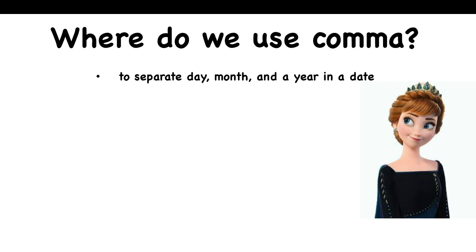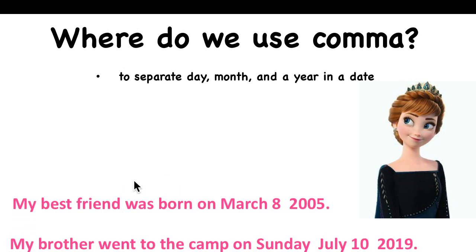And the last one: day, month, and year. 'My best friend was born on March 8, 2005.' This is the date — the comma goes after March 8. 'My brother went to camp on Sunday, July 10, 2019.' We need two commas: after Sunday and after July 10.